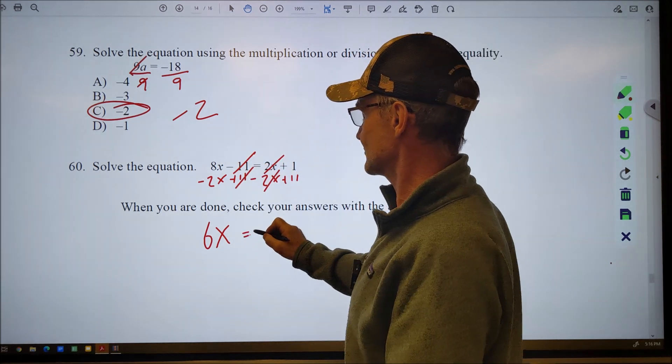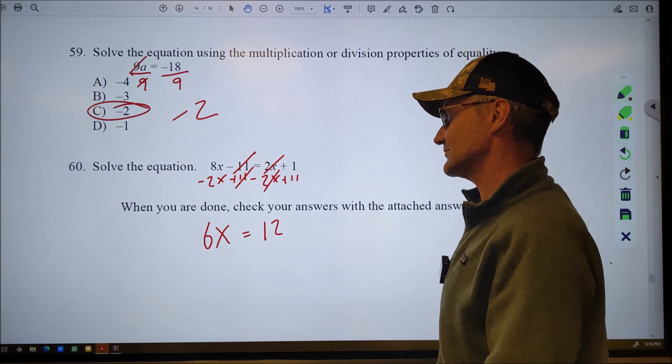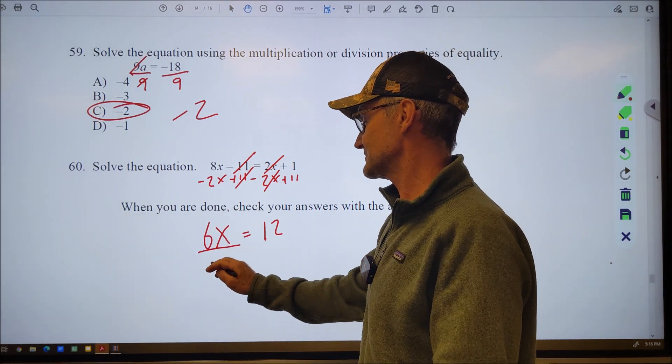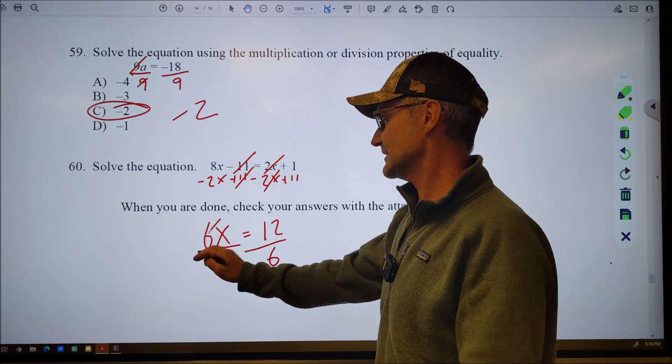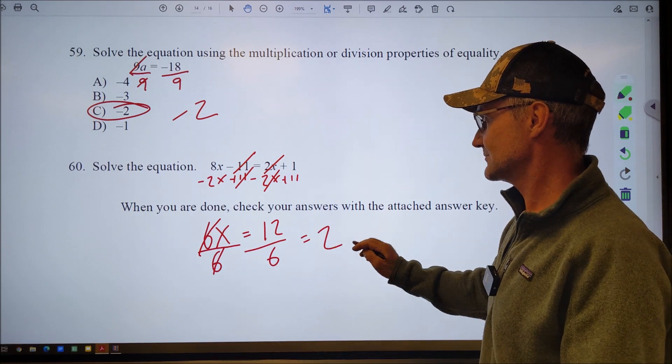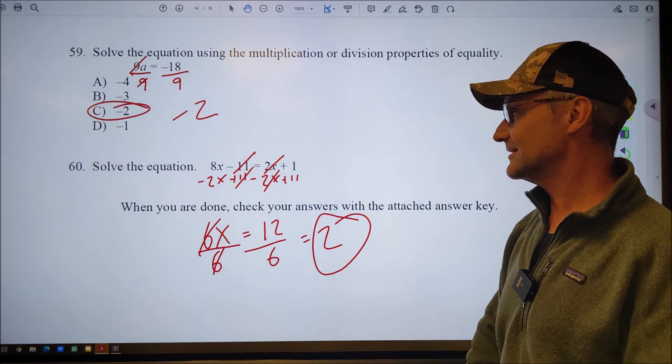I have 6x equals 12. Multiplication. Reverse that. I got to divide. Divide both sides by 6. Those will cancel giving you my variable by itself. 12 divided by 6 is equal to 2. There we go.